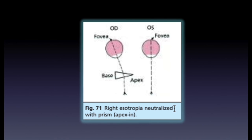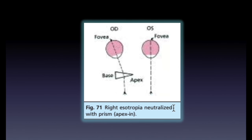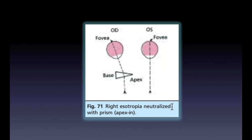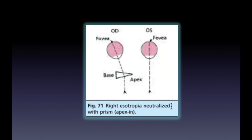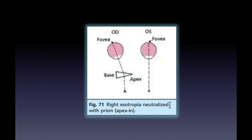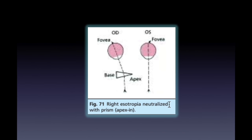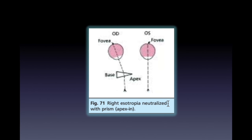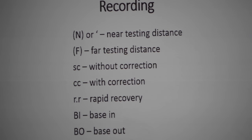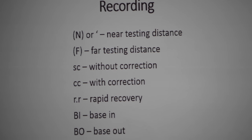For example, in a right esotropia, the right fovea is turned temporally. To focus the light on the right fovea, a prism that is base out is placed in front of the right eye. When recording the result obtained on PCT, it is important to note the fixation distance, the use of correction, the speed of recovery, and the prism strength and direction.